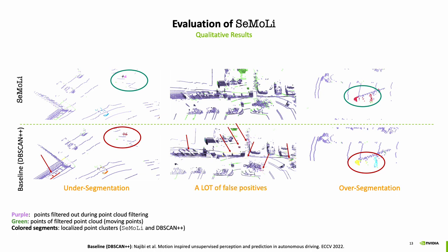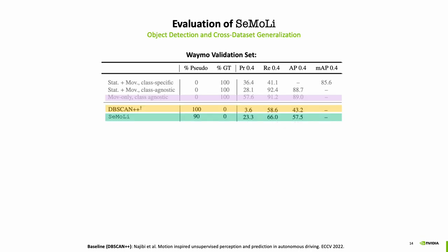Simoli is also able to filter out noise points in the filtered point clouds, whereas dbscan++ is not able to filter them out and leads to a lot of false positive pseudolabel clusters. We also show that compared to training on ground truth data, Simoli still shows a performance gap. However, compared to our heuristic-based baseline dbscan++, Simoli shows over 14 percentage points improvement.